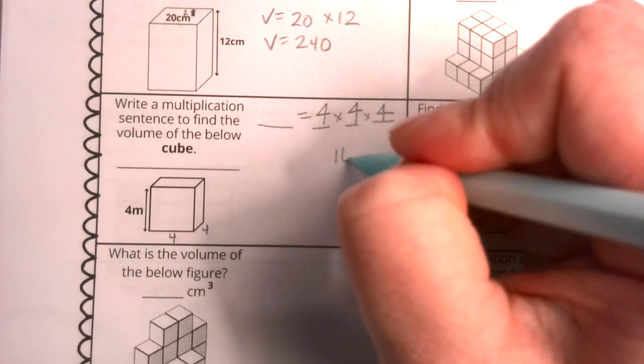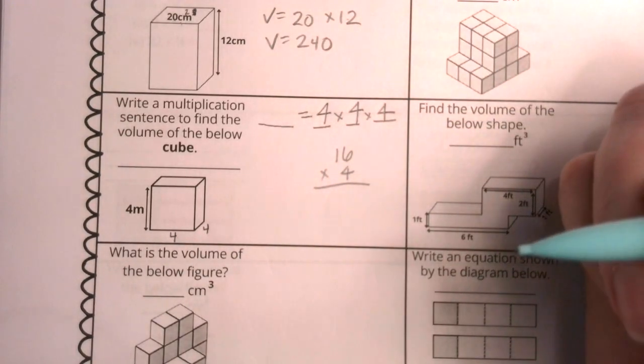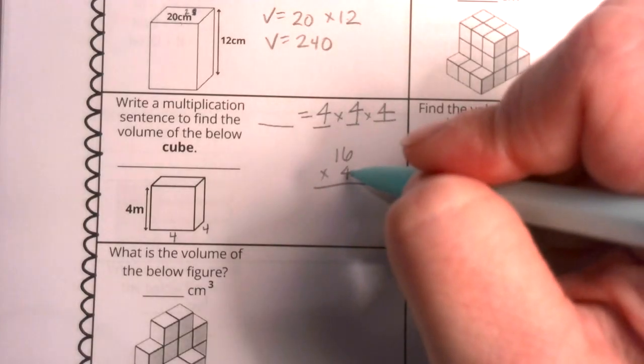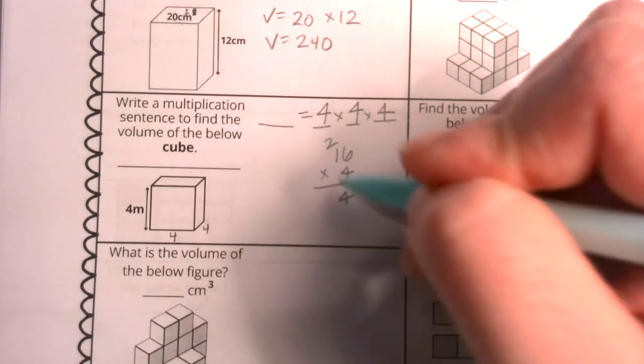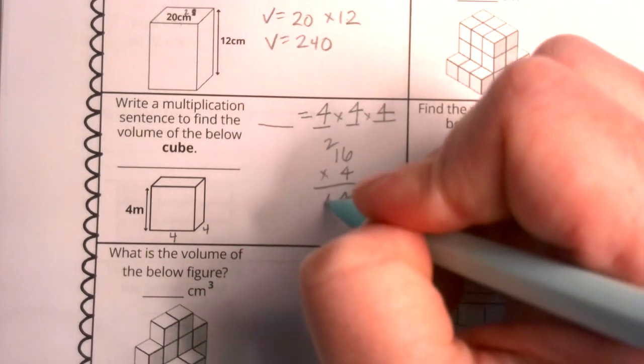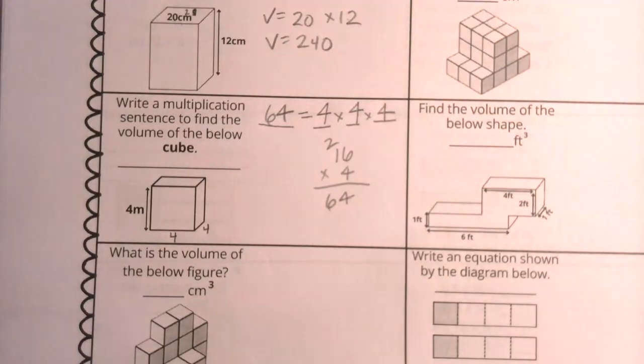Four times four is 16. We need to figure out what 16 times four is and then we'll have our answer. Six times four is 24. Here's my four carrying my two. Six times one is four plus two is six. So I know that the answer here is going to be 64.